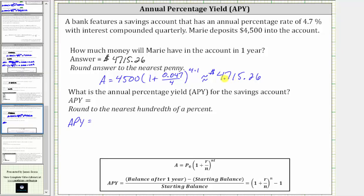This equals $4,715.26 minus the starting balance of $4,500, and then this difference is divided by $4,500. Because we're asked to round the percentage to the hundredths place value, or two decimal places, and this will give us the decimal, we'll have to round this quotient to the fourth decimal place.